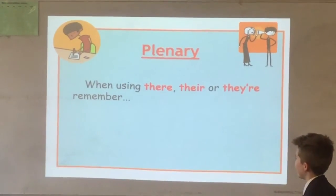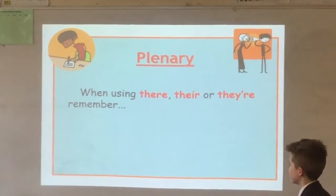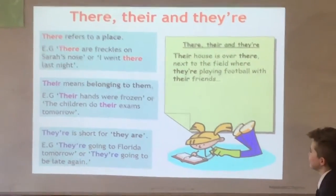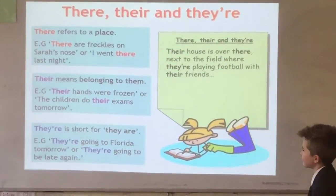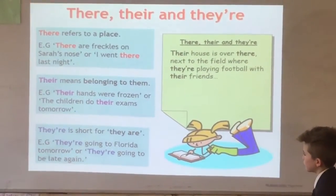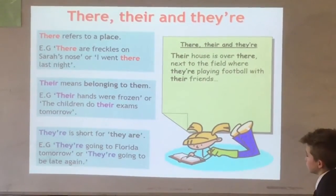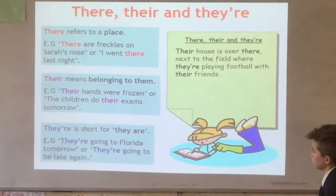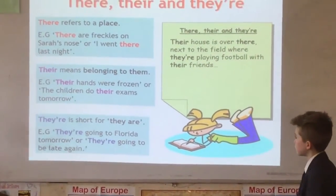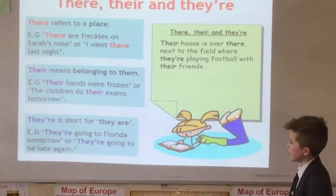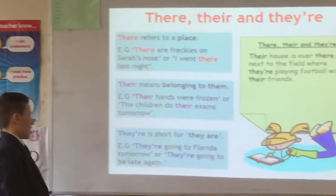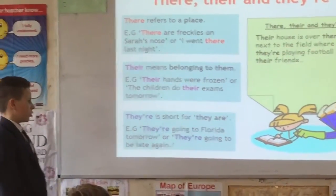When you're using there, their, and they're, remember: there refers to a place — for example, Egypt. Their means belonging to someone — for example, their hands are frozen, or the children do their exams tomorrow. They're is short for they are.